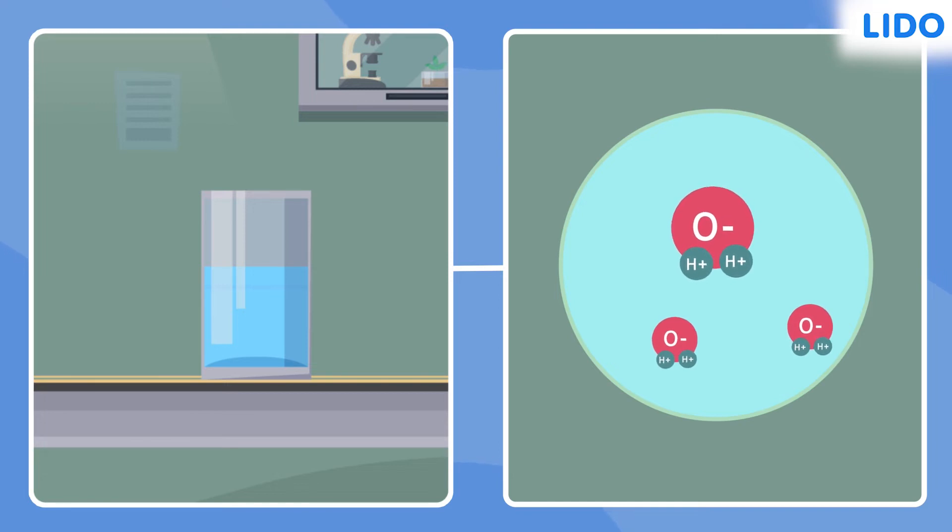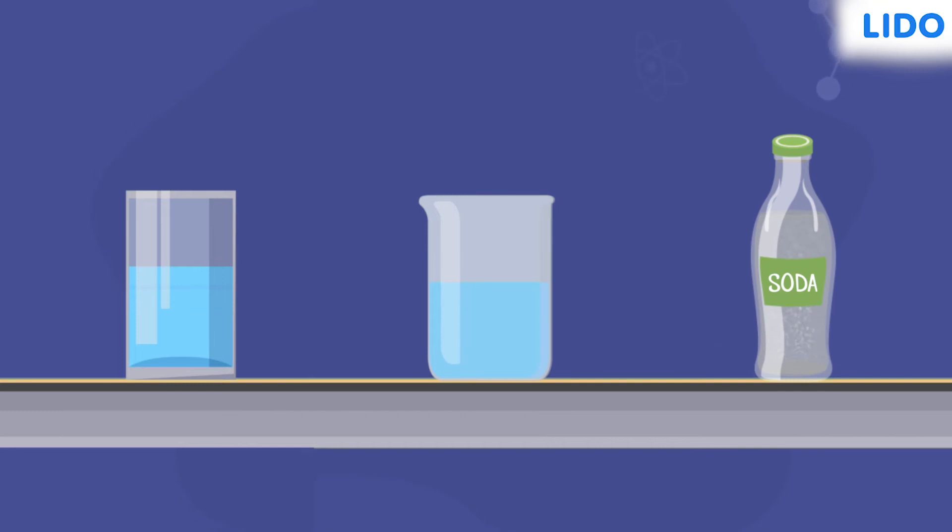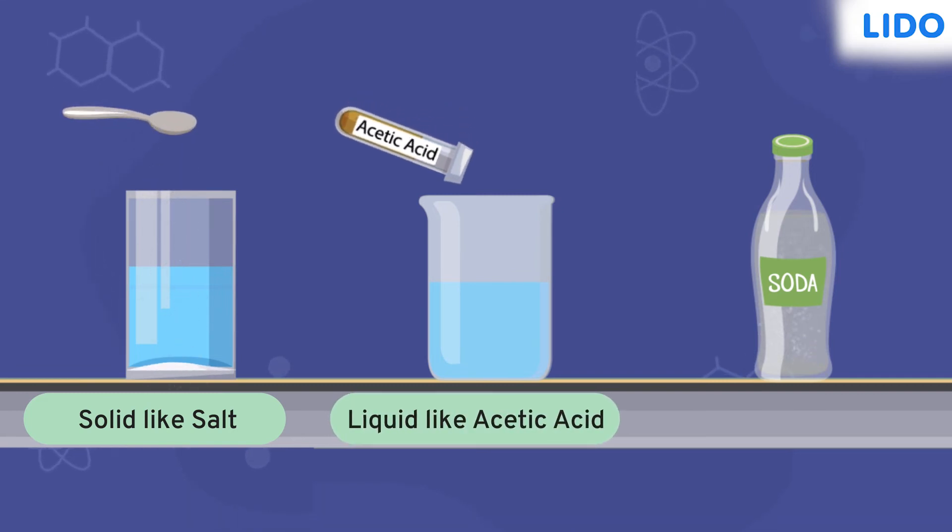Does that mean that water can dissolve every substance in it? Well, not really. Water is called a universal solvent because out of all the solvents on earth, water can dissolve most solutes in it, whether they are solid like salt, or liquid like acetic acid, or gas like soda.